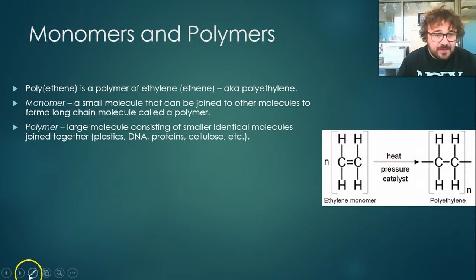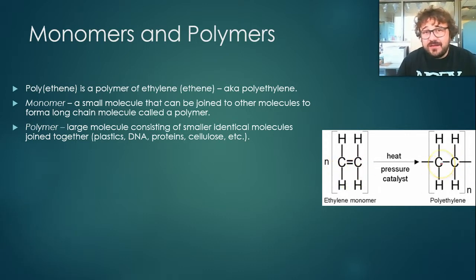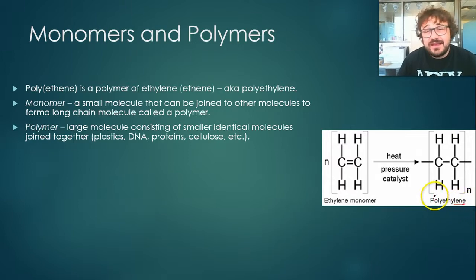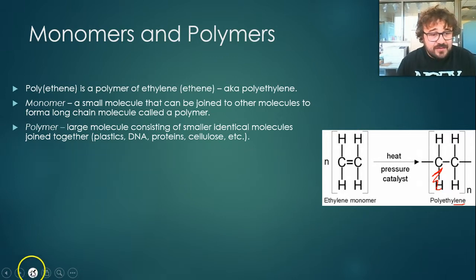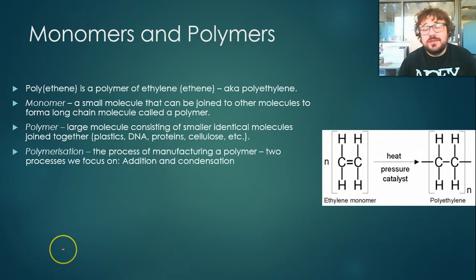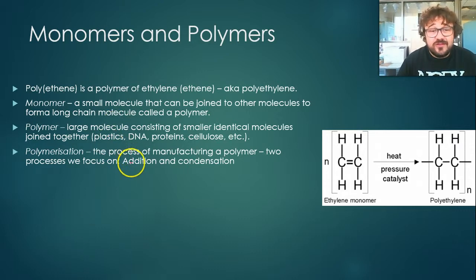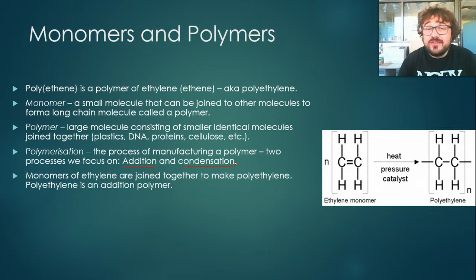Interestingly, even though ethylene is an alkene, and even though the resulting polymer will have no double bonds in it, it is still called polyethylene — that 'ene' part stays. We know this because if we joined it together keeping the alkene, it would be missing H's. So polymerization is the process of making it. When you manufacture a polymer, we are doing something called polymerization. During this course we're going to focus on two types: addition and condensation, and there's a third one to come. Monomers of ethylene are joined together to make polyethylene. Polyethylene is an addition polymer.